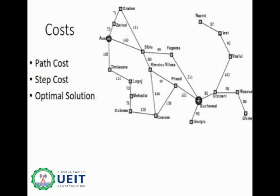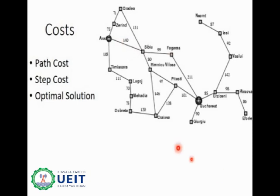Path cost is the sum of the total node sequence from root to goal. For example, travelling from Arad to Bucharest via Sibiu, Fagaras gives a path cost of 140 + 99 + 211 = 450. Step cost is the cost of a single action taken — for example, from Arad to Zerind is a step cost of 75, and from Arad to Sibiu is a step cost of 140. An optimal solution is the best possible solution — the one with the lowest possible cost.